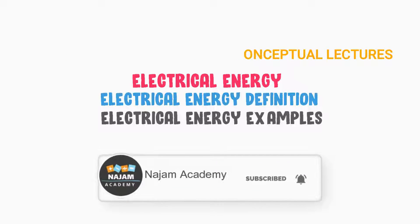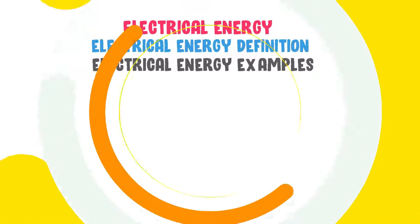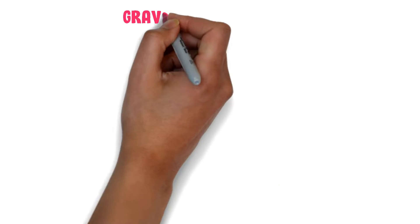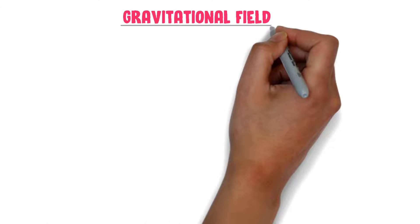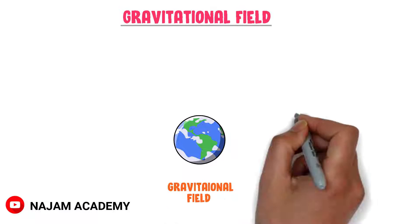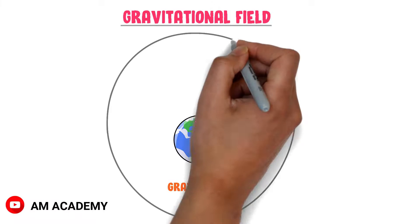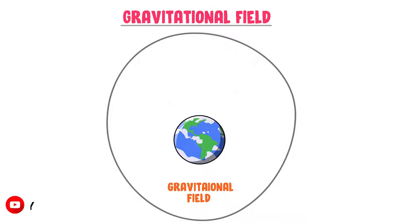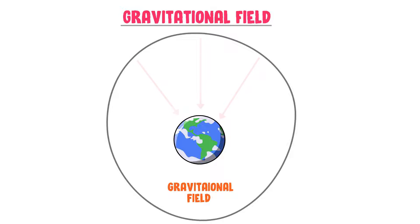Firstly, let me teach you the concept of gravitational field. We know that there is a gravitational field around the earth, and everything falls towards the earth when present in the gravitational field.